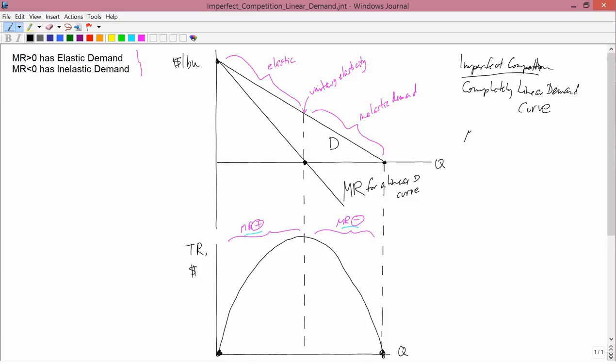So marginal revenue has the same P-intercept as the demand curve and twice the slope of the demand curve.